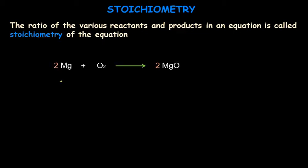Let's learn this with the help of an example. Magnesium reacts with oxygen to make magnesium oxide, whose formula is MgO. Before we study stoichiometry, we need to balance this equation. To balance oxygen O₂, we add 2 in front of the product, and to balance magnesium we add 2 in front of magnesium in the reactants.